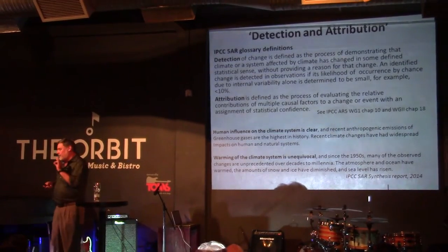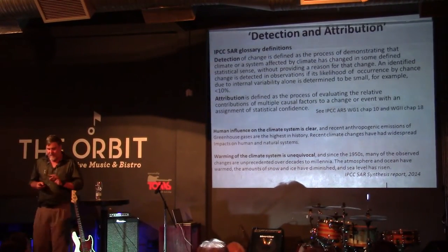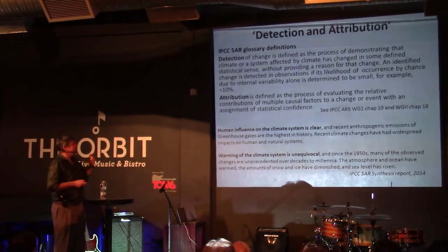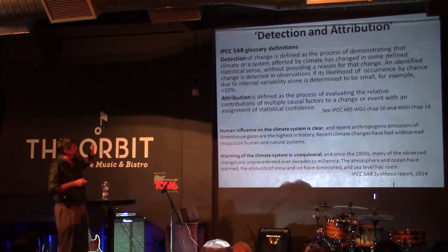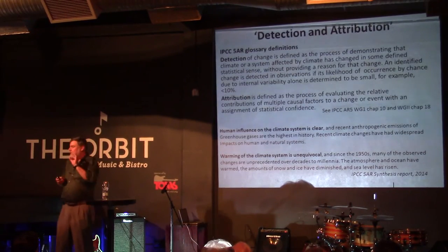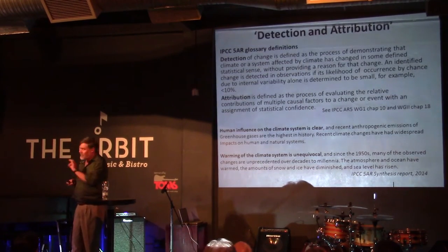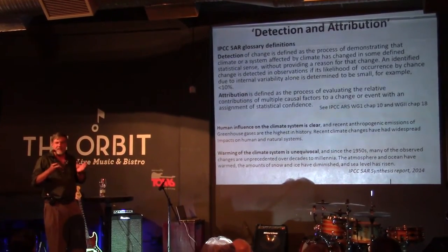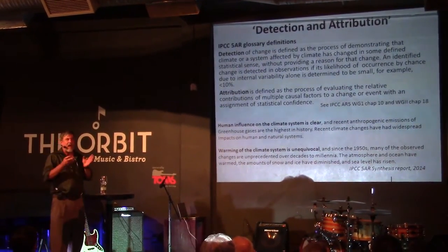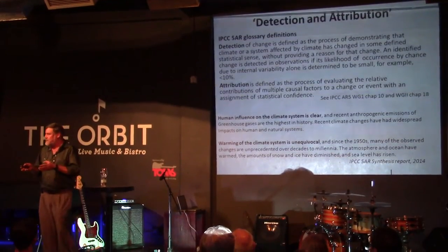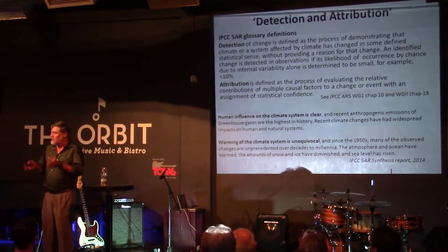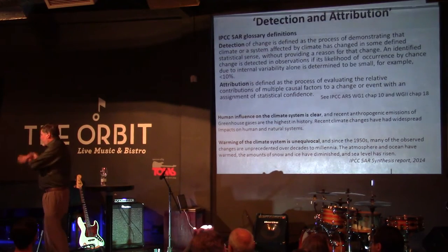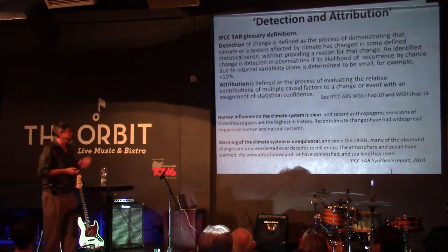What the legitimate debate is about is around the attribution thing — how can we define the relative contributions in a complex system which has multiple causality? There are many things which influence the climate dynamics. How do we assign relative weights to natural phenomena, orbital forcing, and then, of course, human effects? And that's the big thing.